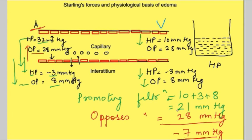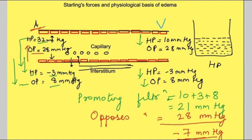There is an inward pull of water at the venous end, meaning water filtered at the arterial end is reabsorbed at the venous end. However, since the net outward force at the arterial end was 15 mmHg and the net inward force at the venous end is only 7 mmHg, some fluid remains in the interstitial space every time blood passes through a capillary. This excess fluid is removed by the lymphatic circulation.